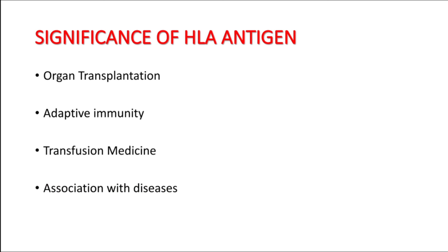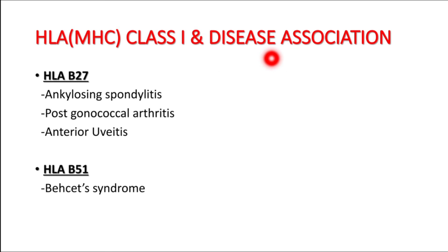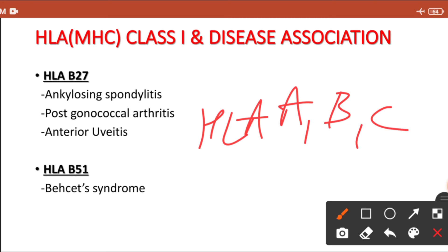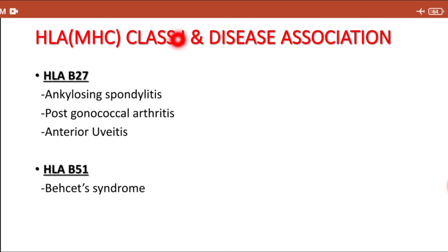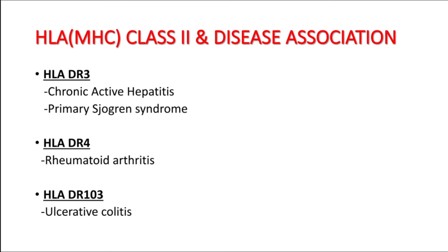HLA antigens are associated with many diseases. Examples of MHC class 1 molecule associated diseases: HLA-B27 is associated with ankylosing spondylitis, post-gonococcal arthritis, and anterior uveitis. HLA-B51 is associated with Behçet syndrome. HLA-A is associated with hereditary hemochromatosis. HLA-Bw47 is associated with 21-hydroxylase deficiency.